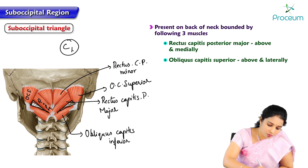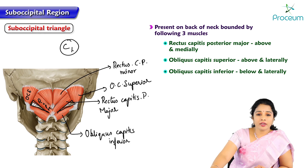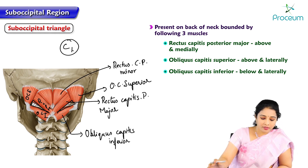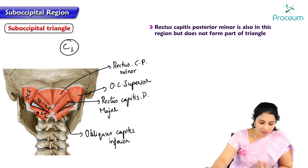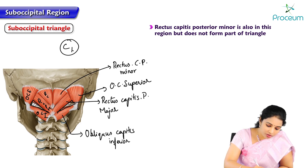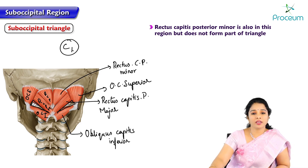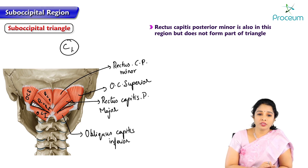Obliquus capitis superior is above and laterally, and inferiorly — that is below and laterally — it is formed by obliquus capitis inferior. Rectus capitis posterior minor is also in this region but does not form a part of the suboccipital triangle. The triangle is covered by a layer of fibro-fatty tissue and several muscles which form the roof.